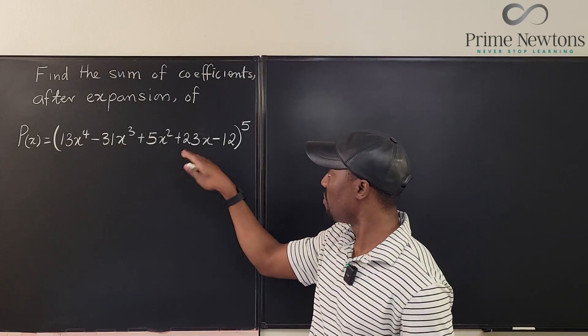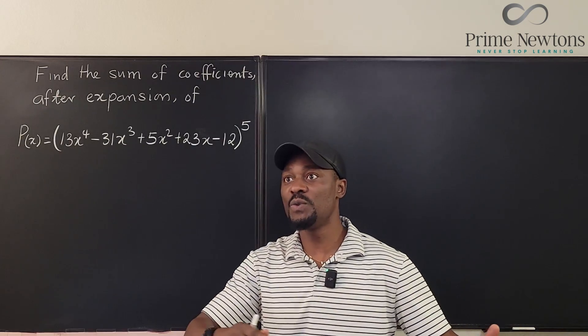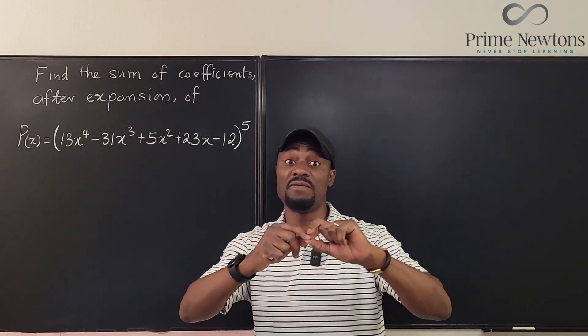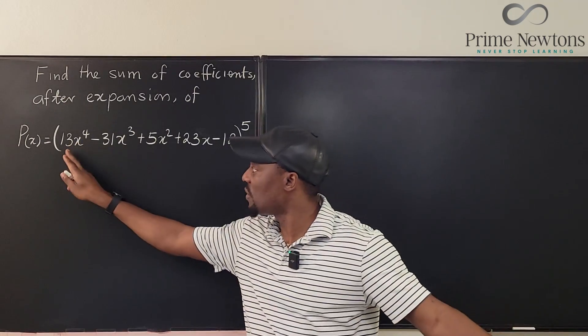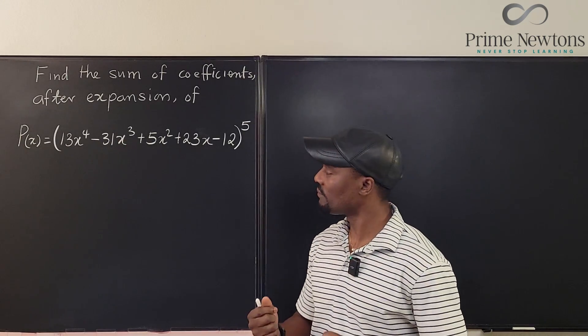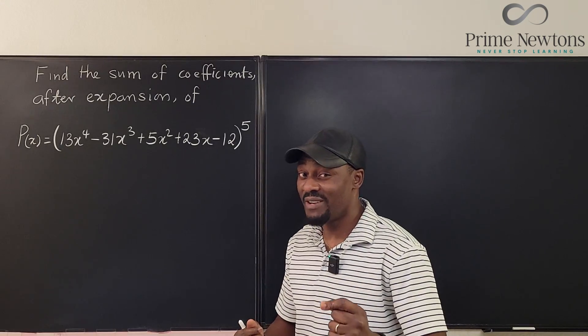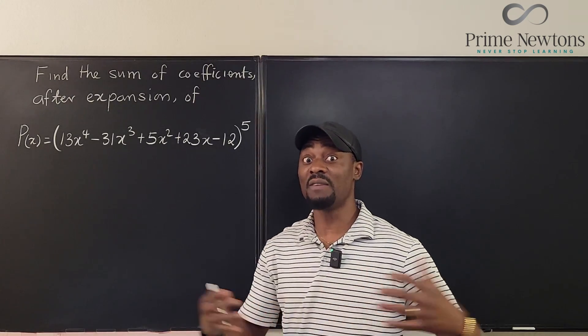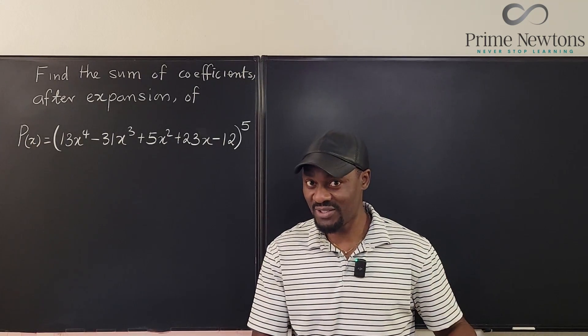So we have this long polynomial raised to the fifth power. And if we do the multiplication, you expand everything, you're going to have a very, very long polynomial. And we're going to have to add all the coefficients together and see what the sum would be.